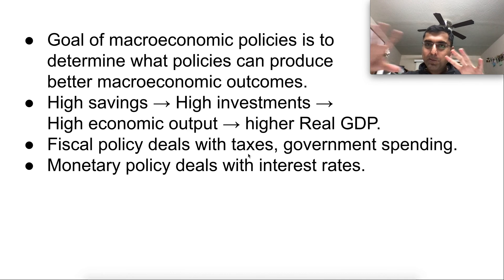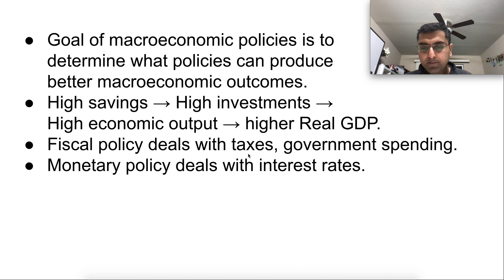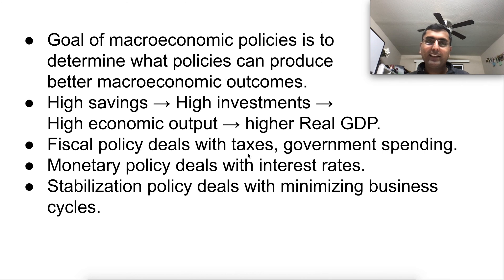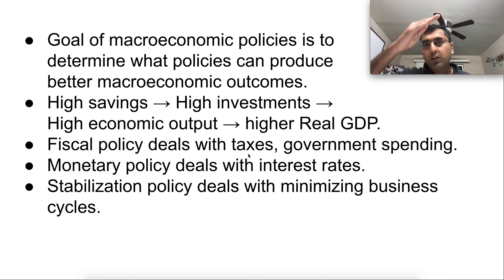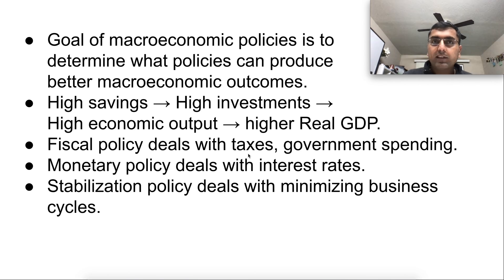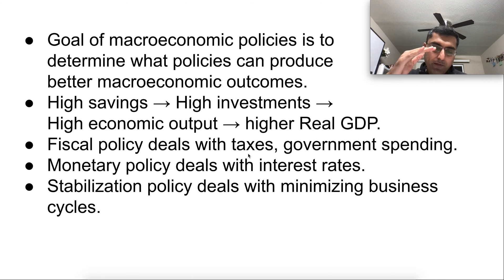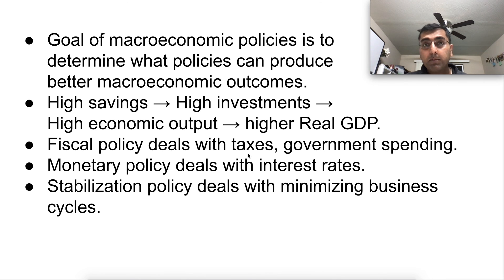Monetary policy deals with interest rates — the Federal Reserve manages how much money is in the market and what the interest rate should be. Stabilization policy deals with minimizing business cycles: every so often we see GDP contracting, like in 2008. Stabilization policy asks how active you should be — when unemployment rises, should you jump in, add money to markets, reduce interest rates, and lend to riskier borrowers?